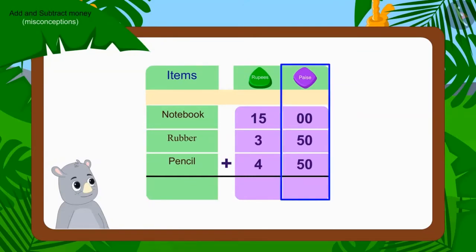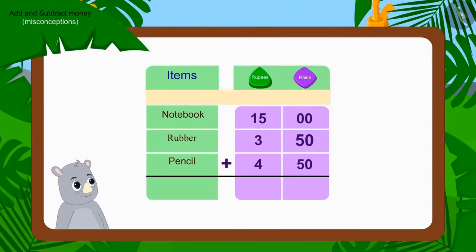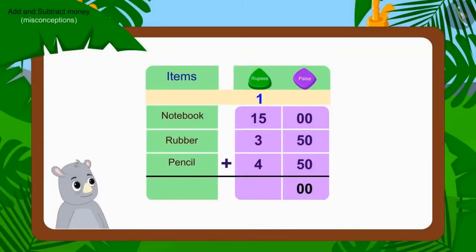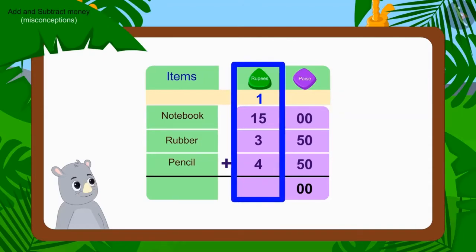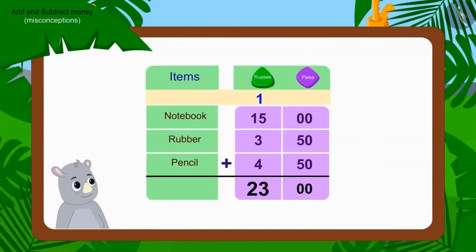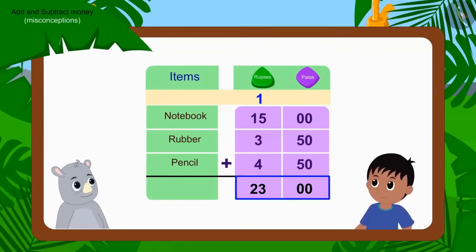What shall we do first? How much money do we get by adding 50 and 50 paise? 100 paise. How do we write this? We will write 100 paise as carryover. Gaggu added 100 paise correctly, but he forgot to write the carryover. Now, can you tell — by adding the rupees with the carryover — how much Raju actually has to pay Gaggu? Well done, kids — you found the right answer. Raju owes Gaggu 23 rupees for those items.